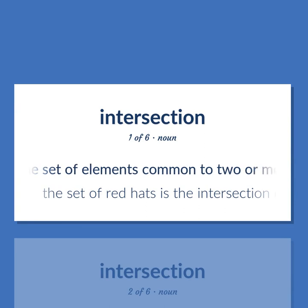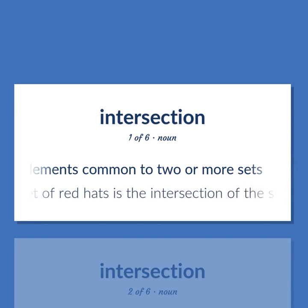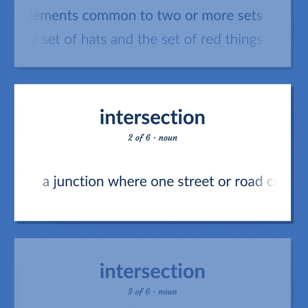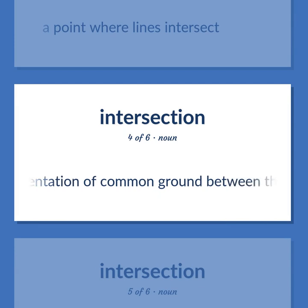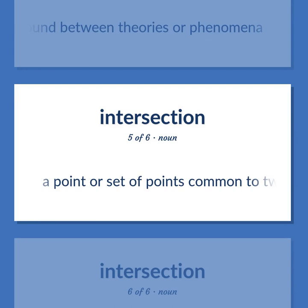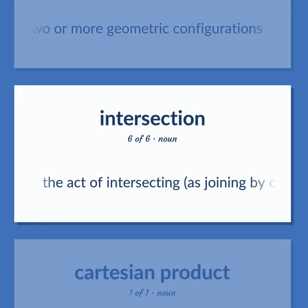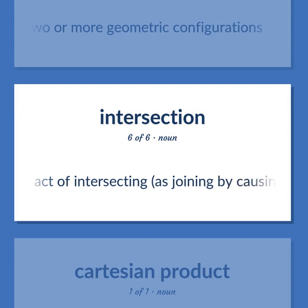Intersection. The set of elements common to two or more sets. The set of red hats is the intersection of the set of hats and the set of red things. A junction where one street or road crosses another. A point where lines intersect. A representation of common ground between theories or phenomena. A point or set of points common to two or more geometric configurations. The act of intersecting is joining by causing your path to intersect your target's path.